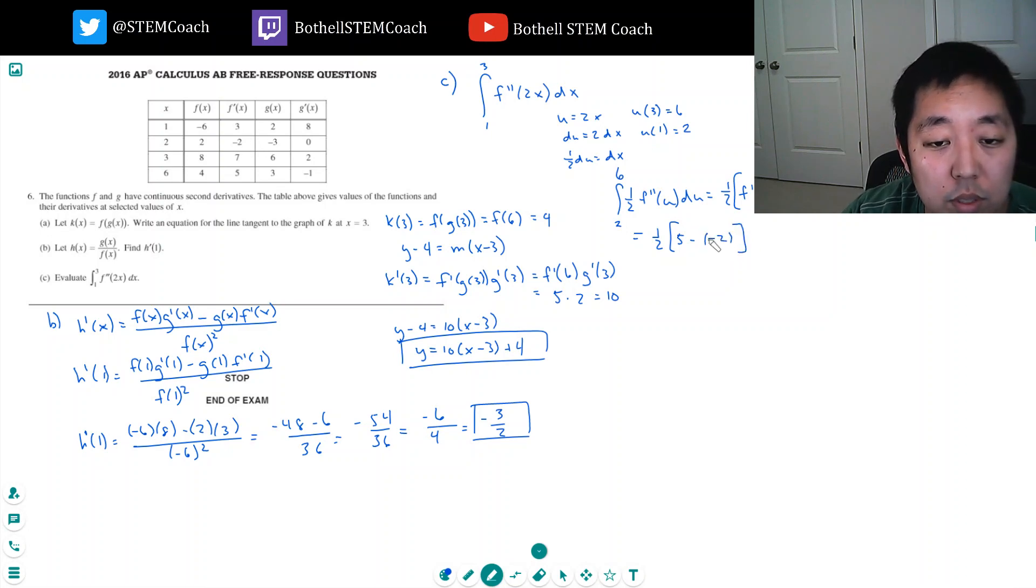That's 5 minus negative 2, so that's 7. So that's 7 halves.